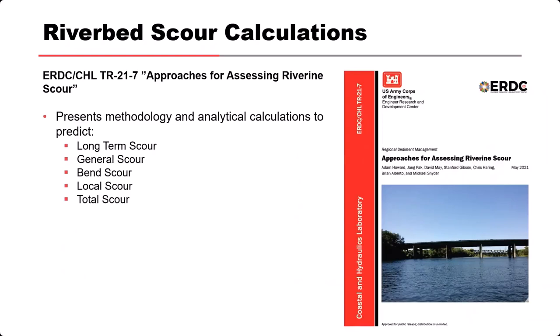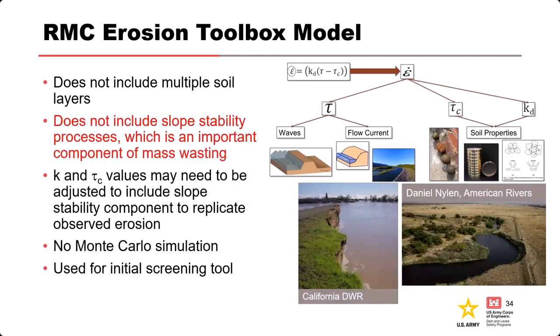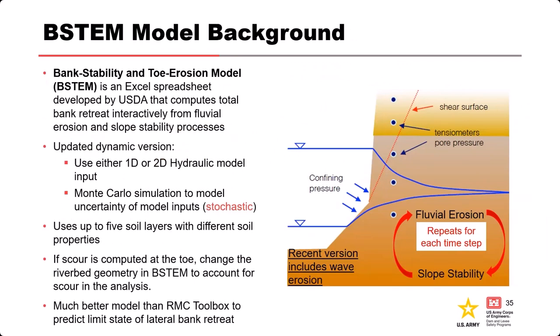For riverbed scour calculations: a new publication came out about two years ago from folks at ERDC and St. Paul District, who were also working on Sacramento, providing new guidance for assessing riverine scour. The RMC also has an existing toolbox that calculates volume erosion as a linear progression — straightforward but very sensitive to the erosion rate. It was available but found to be very sensitive when used on the American River.